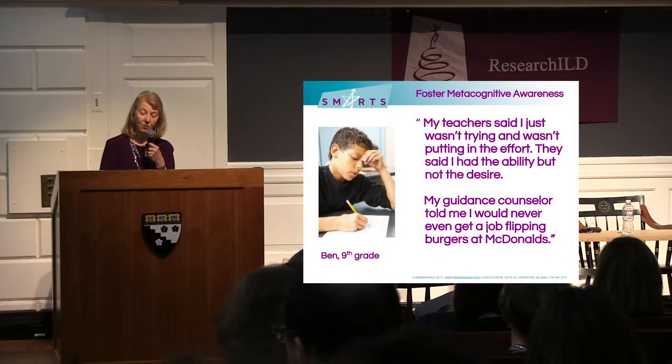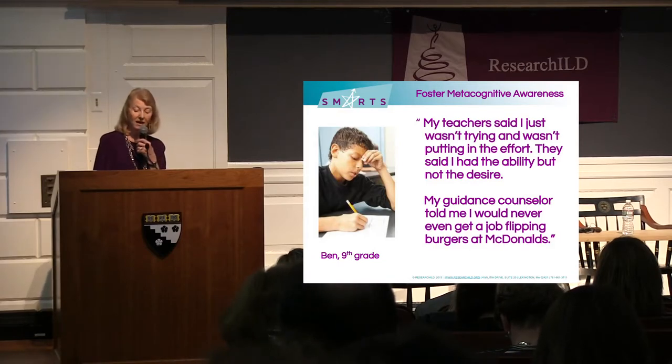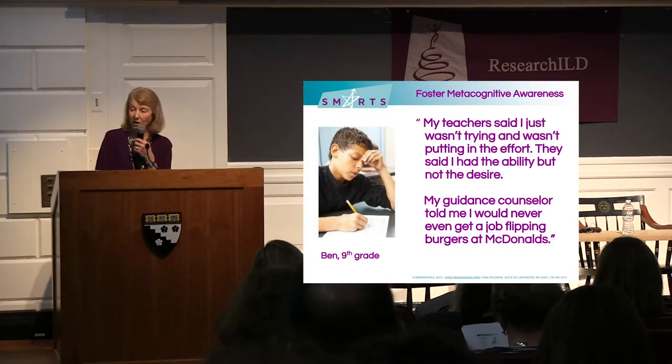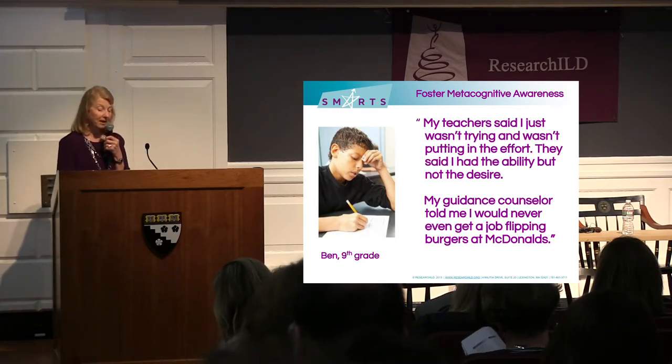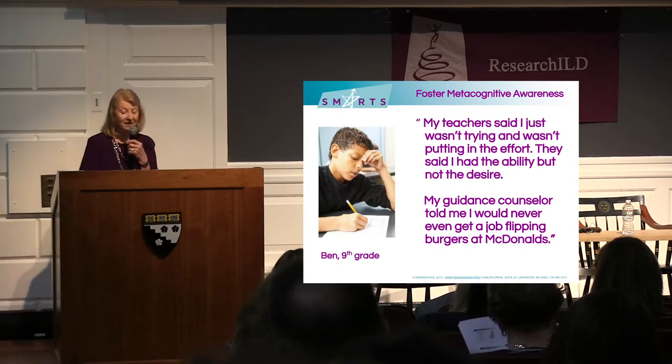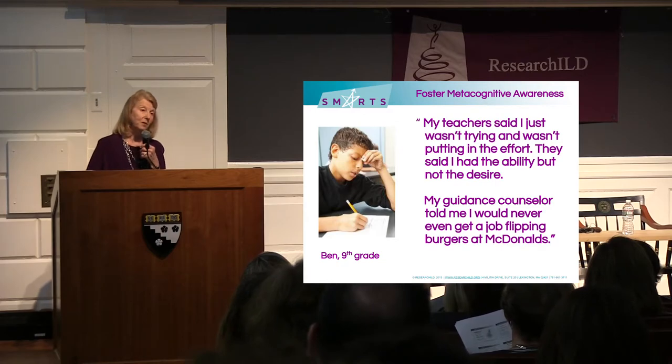This begins to make it more manageable — starting the process of empowering the student to learn how to learn. The second piece is getting teachers and students to recognize whether they see the student similarly. In Ben's case, his teacher said he wasn't trying and didn't have the desire. Ben felt he was working so hard. And his guidance counselor told him he would never get a job flipping burgers at McDonald's — imagine a ninth-grader being told that. Obviously there comes a point where he gives up.